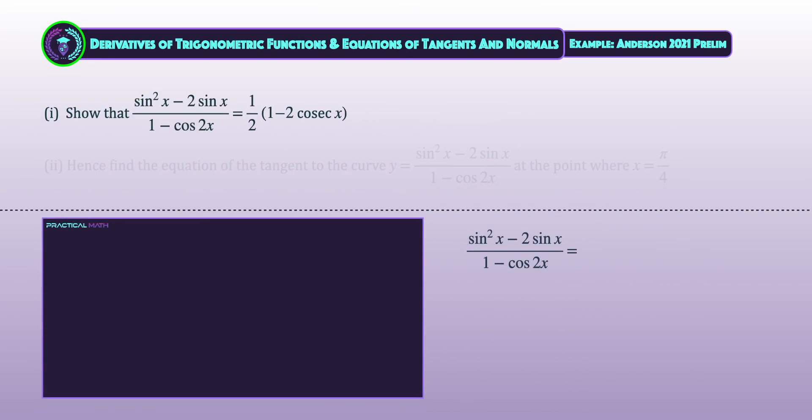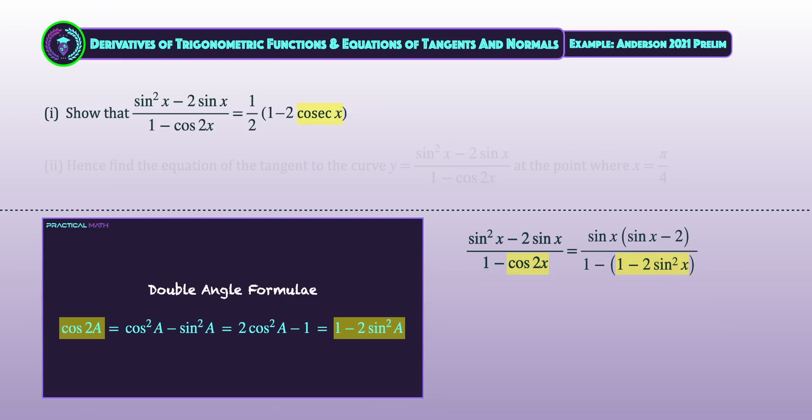As the angle on the left side of the proving equation is double the angle on the right side, we will require the use of double angle formula for cosine. Since the end of the proving equation involves cosecx, which is the reciprocal of sinx, we will apply cos2x to be equal to 1 - 2sin²x in our denominator. At the same time, we will also factor out the common term of sinx in the numerator. We will now simplify the denominator, so that we are able to cancel sinx to the top and bottom to simplify it to (1/2)(sinx - 2)/sinx.